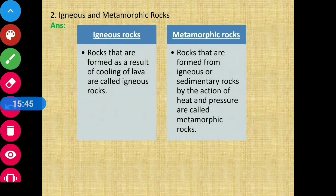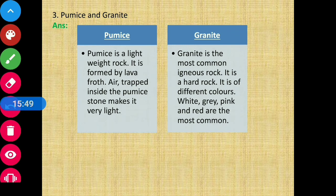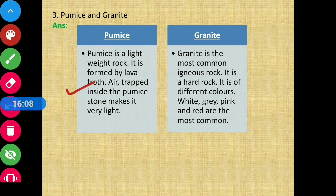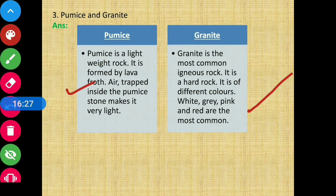Next: Pumice vs Granite. Pumice is a lightweight rock formed by lava — air trapped inside pumice makes it very light. Granite is the most common igneous rock; it is a hard rock found in different colors — grey, pink, white and red are most common. So pumice is lightweight because air is trapped inside it, while granite is very hard.